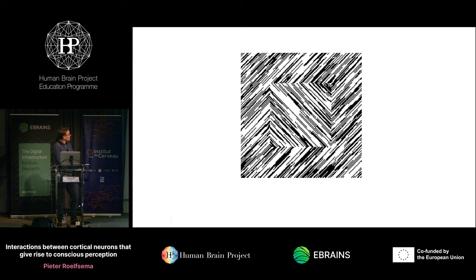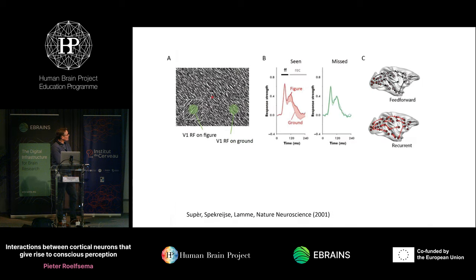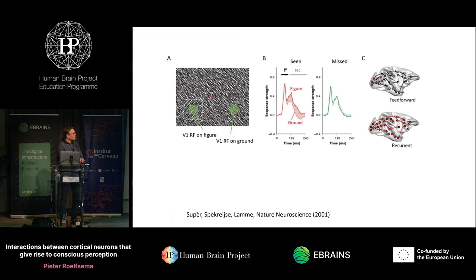Victor showed that when a V1 receptive field falls on a figure rather than the background, you get more activity. First there's feed-forward information from the eye — a peak that doesn't discriminate between figure and background — then information is sent to higher areas that feed back to V1, producing this response enhancement: figure-ground modulation. He also showed that when monkeys perform figure-ground segregation and sometimes fail to see the figure, they get the visual response but not the response modulation. This late phase is thus important for conscious awareness of the figure. We've seen this in monkeys, in humans with depth electrodes recording spiking activity from human cortex, and also in mice.